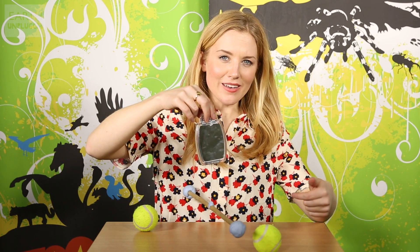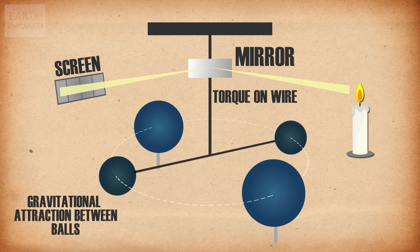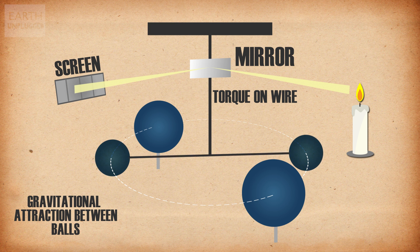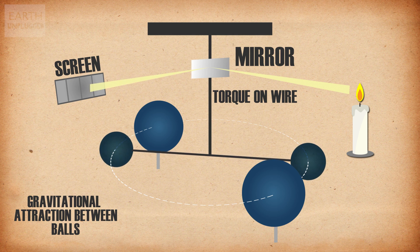It wasn't until quirky English scientist Henry Cavendish came along in 1798 that a critical component was added to complete this puzzle. Cavendish actively wanted to weigh the Earth, and to do this, he needed to work out its density. He came up with an experiment a little bit like this to measure the attractive forces between two objects. As the balls move closer together, they shift the mirror which they are attached to, which then bounces light off in different directions, which he can then measure.